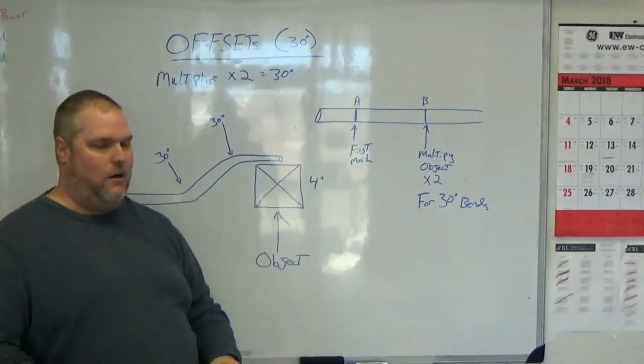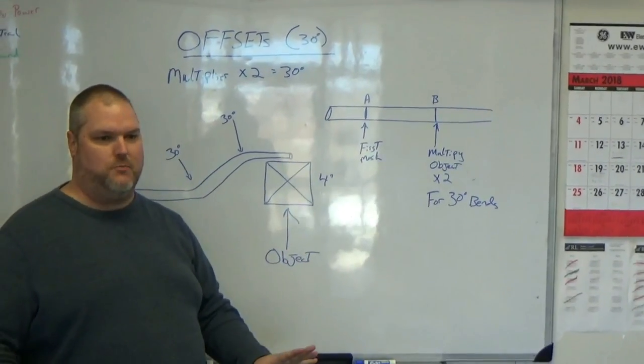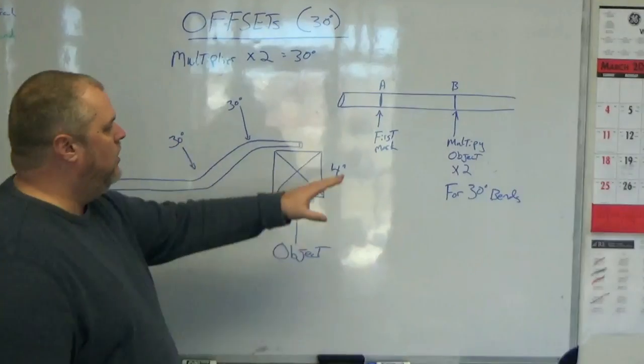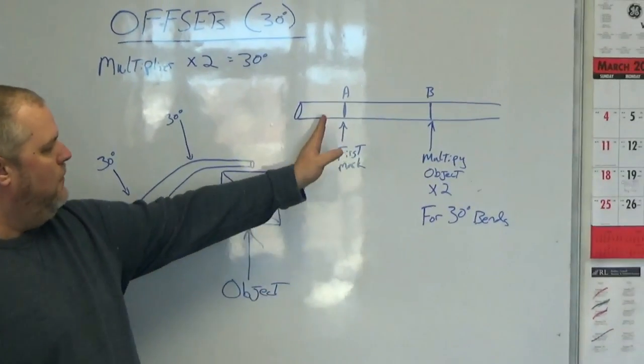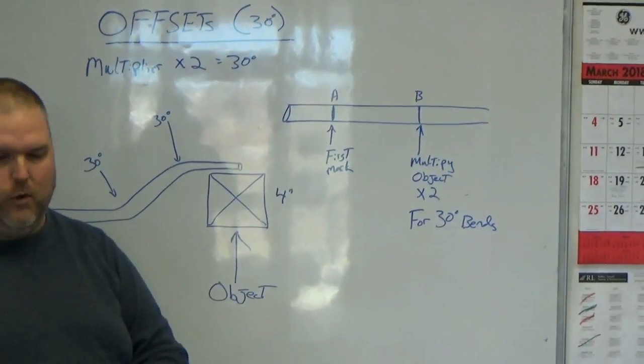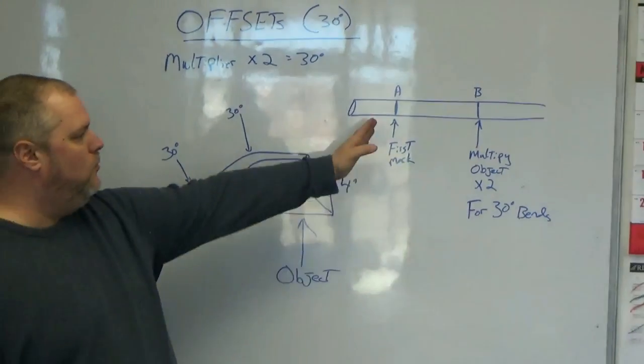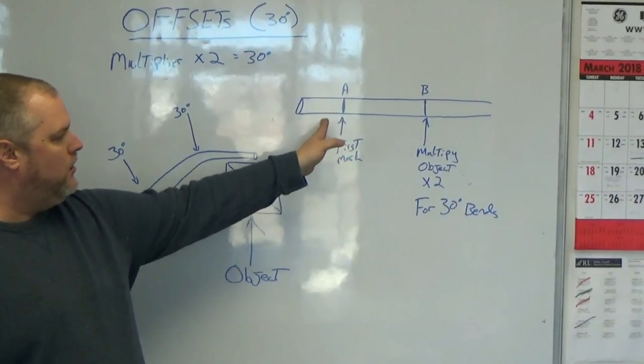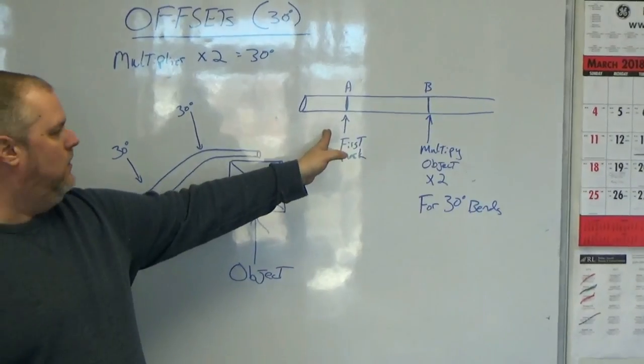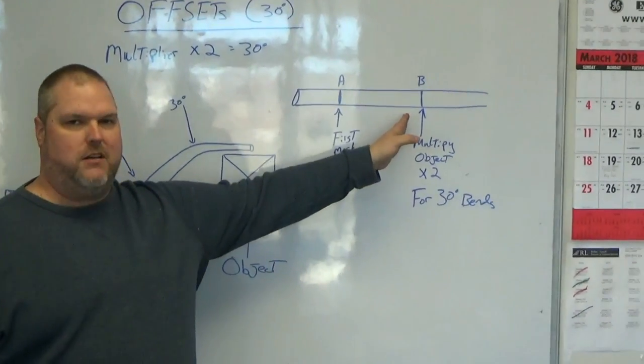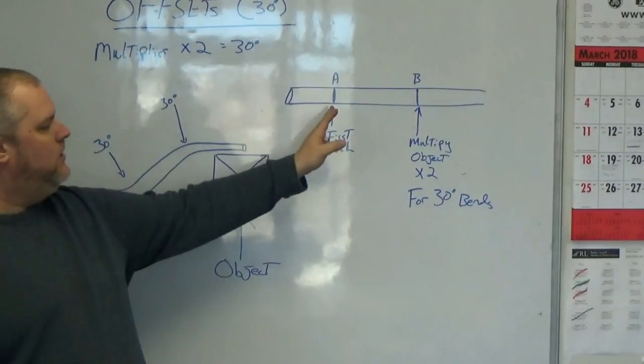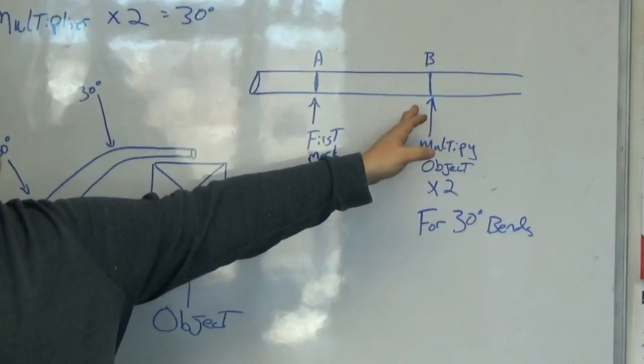You're going to make your first mark. Now, we are not talking about shrinkage at this point—we'll talk about shrinkage in another video. When I show you how to do it on a pipe, I'll explain that better. Our first mark, pretty much we can do whatever we want. The second mark is going to be the actual obstruction times the multiplier distance between A and B mark.